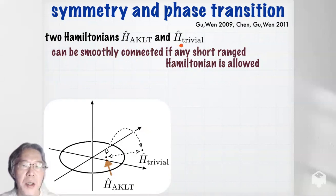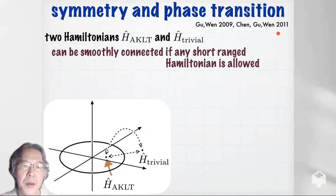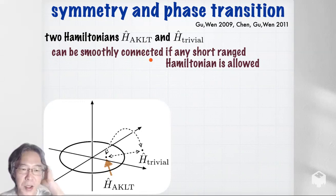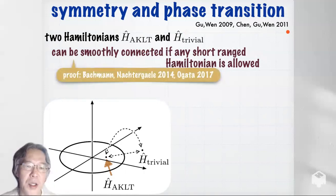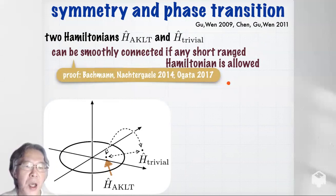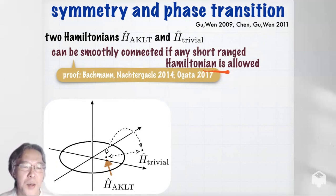What about H_AKLT and H_trivial? According to Gu and Wen in 2011, if any short-ranged Hamiltonian is allowed, then H_AKLT and H_trivial can be smoothly connected with each other. This is somewhat surprising and a bit disappointing, because H_AKLT looks non-trivial with exotic properties, while H_trivial is very, very trivial. But this result — now established rigorously by Bachmann-Nachtergaele in 2014 and Ogata in 2017 — says the Haldane gap is continuously connected to the trivial gap.